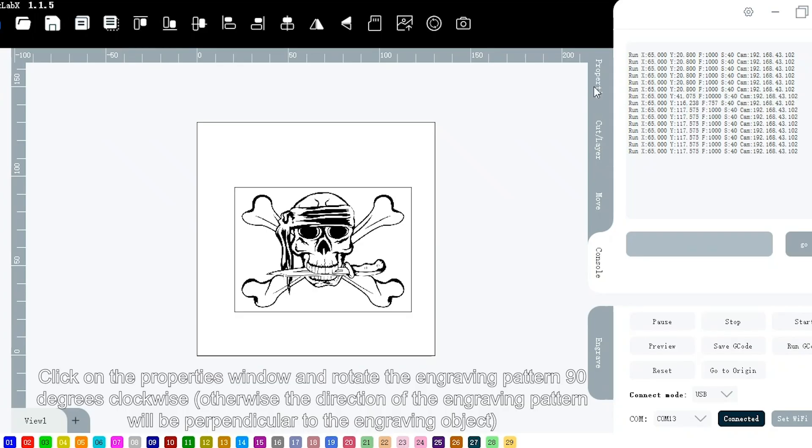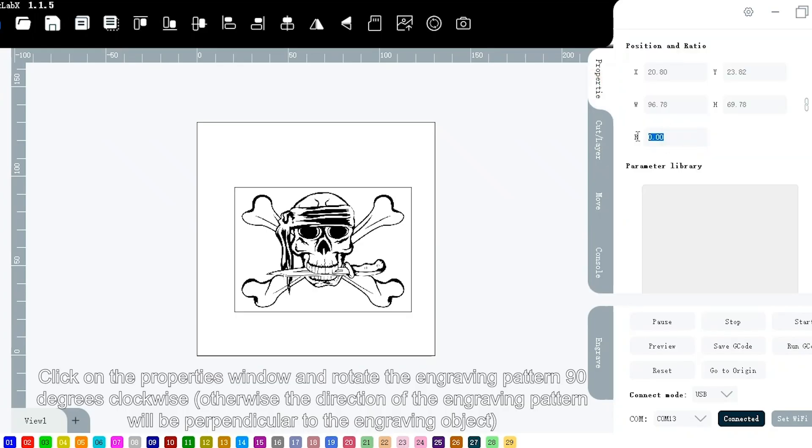Click on the properties window and rotate the engraving pattern 90 degrees clockwise. Otherwise, the direction of the engraving pattern will be perpendicular to the engraving object.